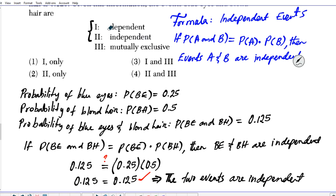So we can cross off option one and option three. The question now is: are these events independent only, or are they independent and mutually exclusive — which is option four? Let's focus our attention on mutual exclusivity.